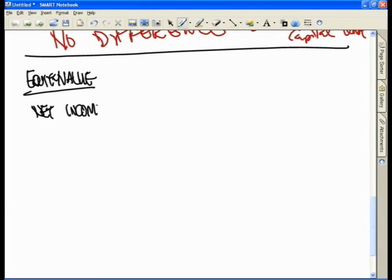In other words, equity value over net income is also known as what ratio? This is also known as your P.E. ratio, price to earnings per share. Why is your equity value over net income the same as your price to earnings per share?